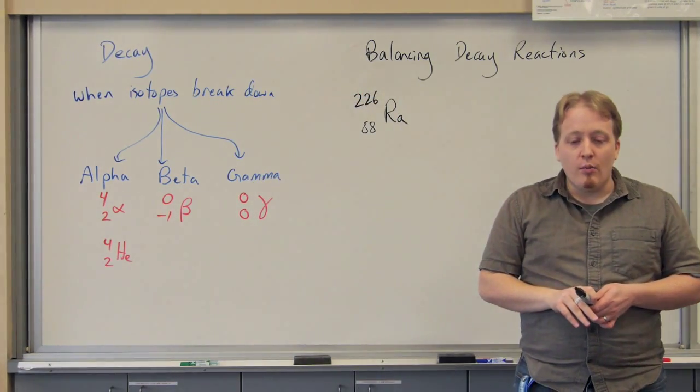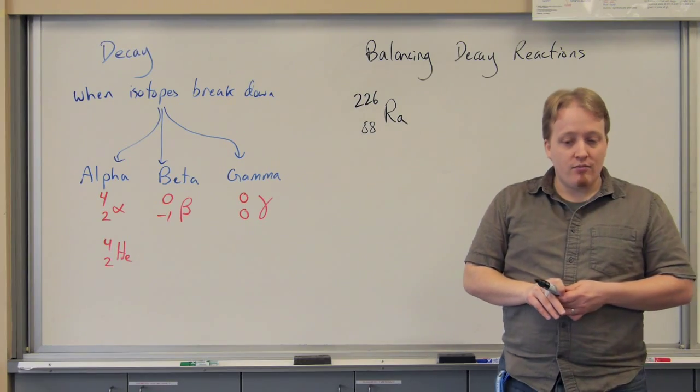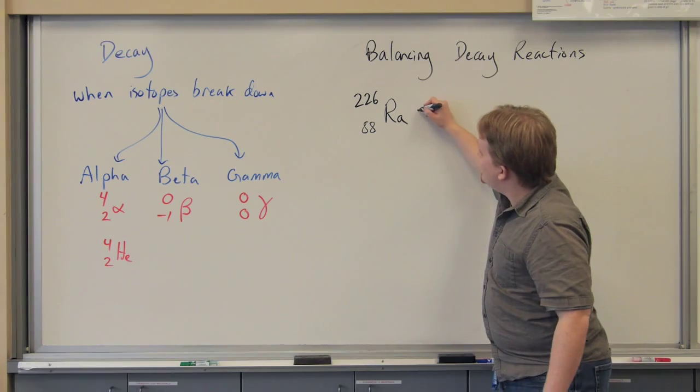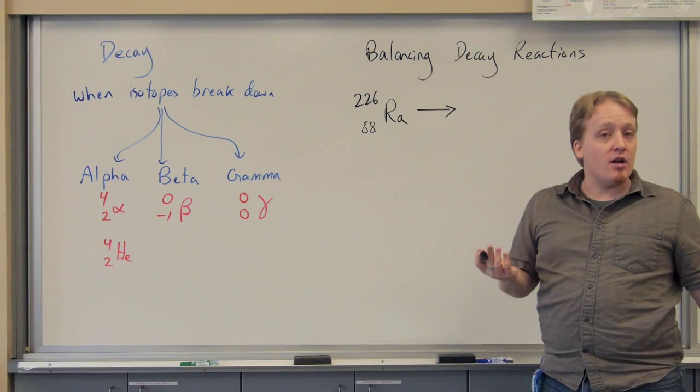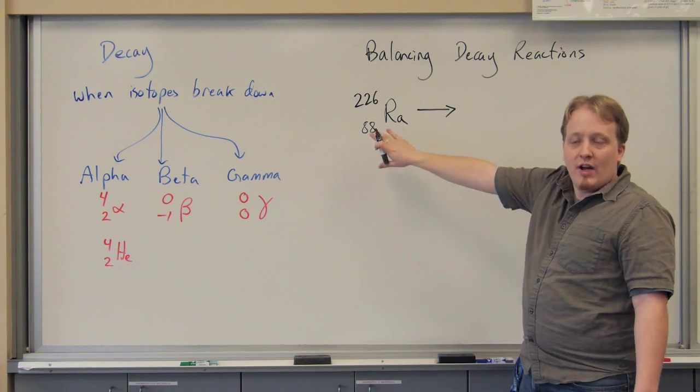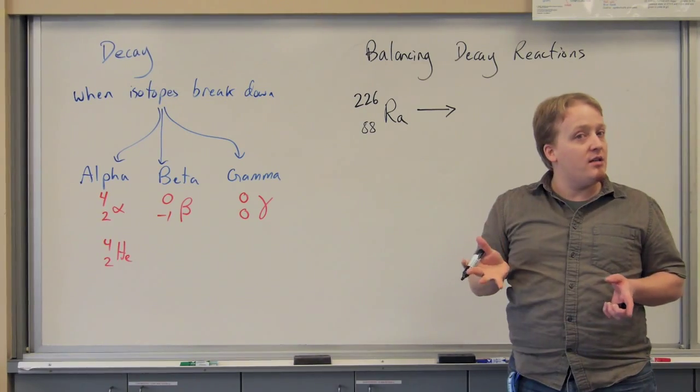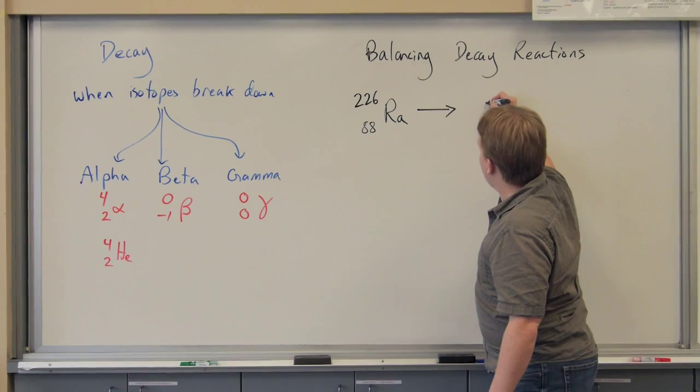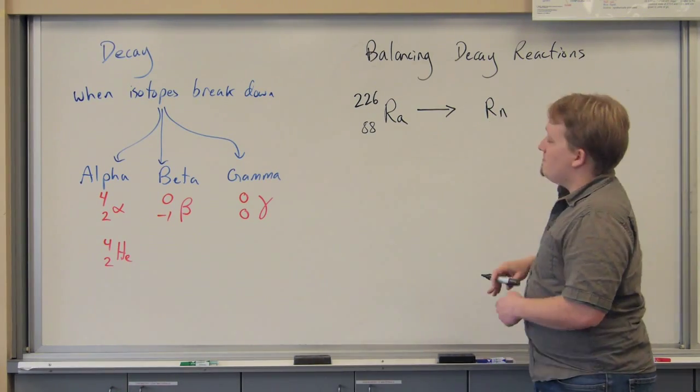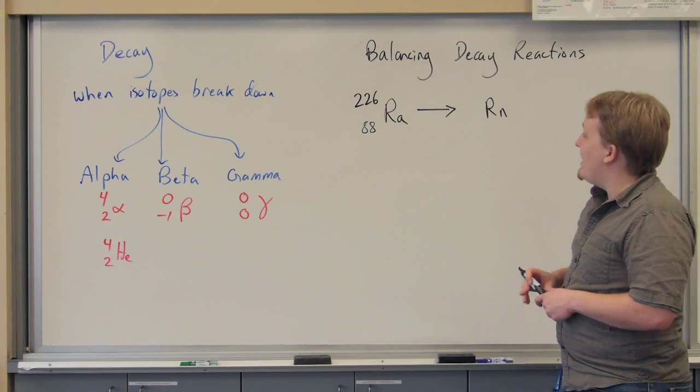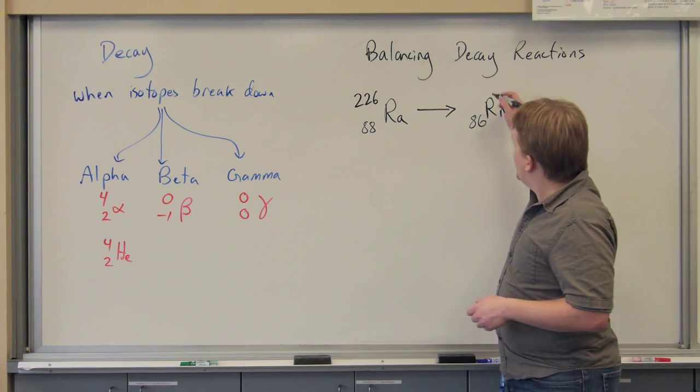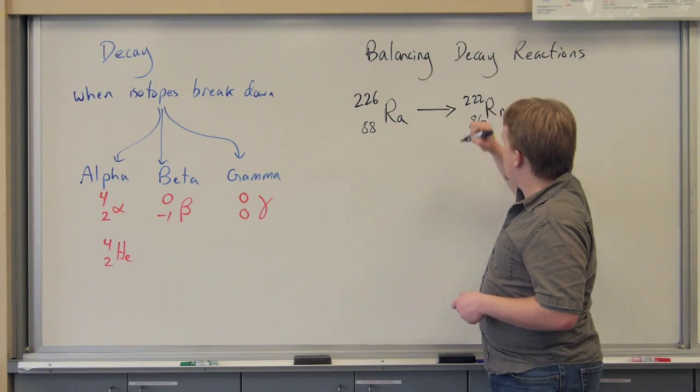Radium will undergo what we call alpha decay. When it undergoes alpha decay, what happens is that we produce a new product. We show the arrow to show reactants and products being separated, just like we did in chemical reactions. And it produces radon. As you can see on your periodic table, it's element 86.